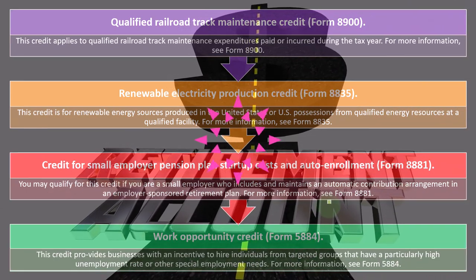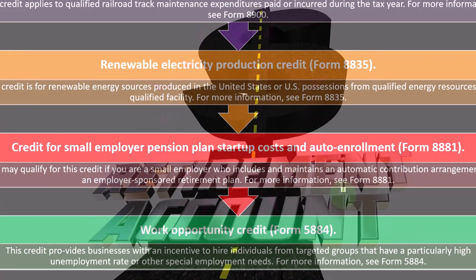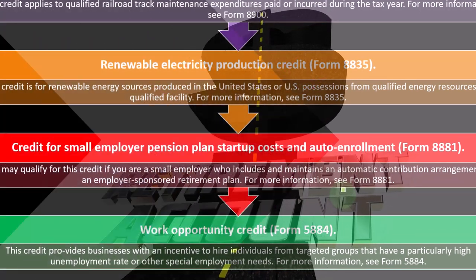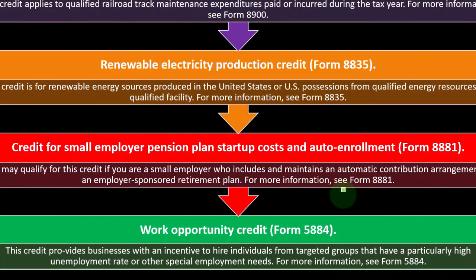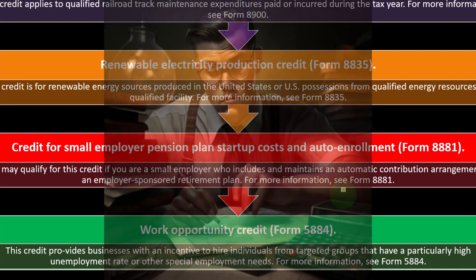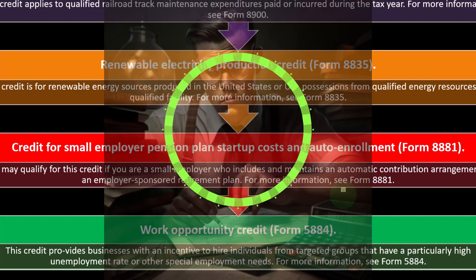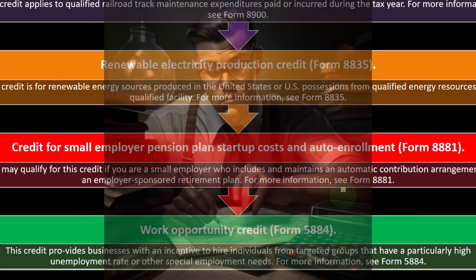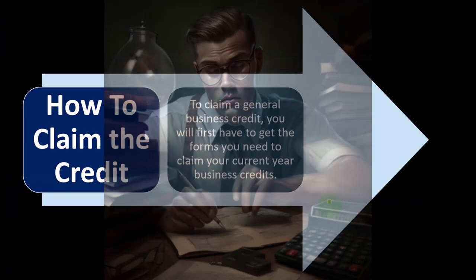The Work Opportunity Credit is on Form 5884. This credit provides businesses with an incentive to hire individuals from targeted groups that have a particularly high unemployment rate or other special employment needs.